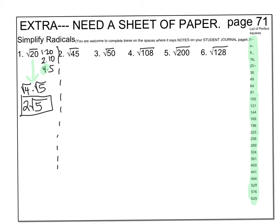For number 2, factors of 45: 1 times 45, 3 times 15, 5 times 9. The biggest perfect square factor is 9. Rewrite as square root of 9 times square root of 5. The square root of 9 is 3. So 3 times the square root of 5 is the simplified answer for number 2.